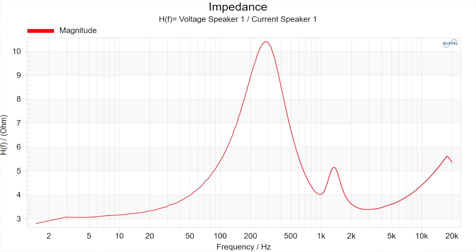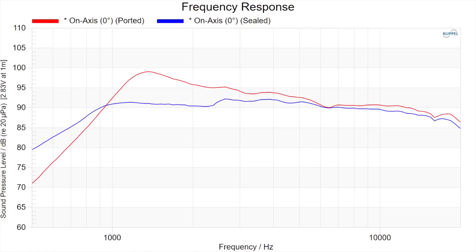We'll start with the impedance to show how this tweeter is tuned. It's tuned to about one kilohertz, evidenced by this little dip in the impedance at the bottom. I don't have phase shown here — I left it off to avoid making the graphic too cluttered — but you can clearly see the impedance dip at around one kilohertz. Now looking at the frequency response, sealed version in blue versus ported in red, you can clearly see how much low-end the ported version provides — almost plus eight or nine dB at some spots, centered around about 1,400 Hz.